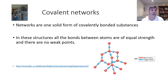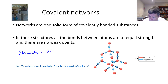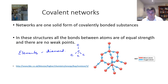Networks are one solid form of covalently bonded substances, and this can include both elements as well as compounds. The best covalent network element is the one we were talking about in the previous video — diamond. Diamond has a structure where each carbon is bonded in a tetrahedral arrangement to four other carbon atoms, and this is how they are all bonded together.